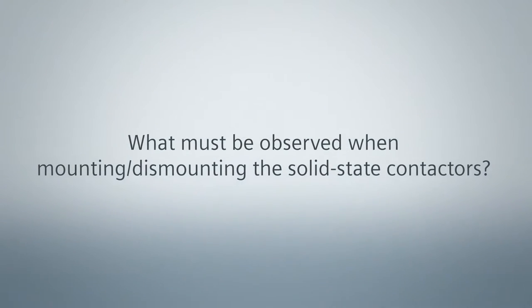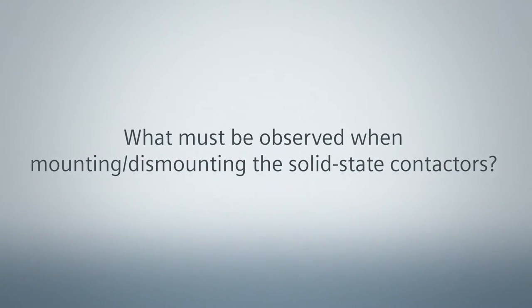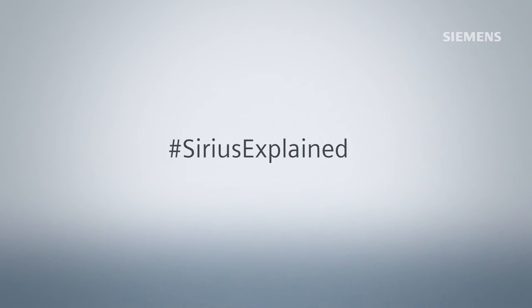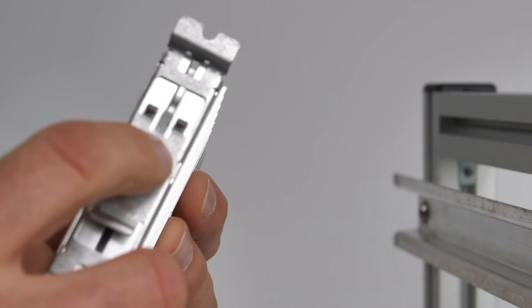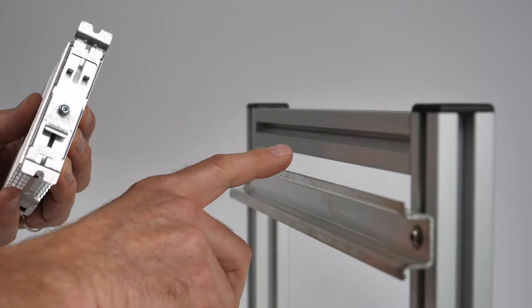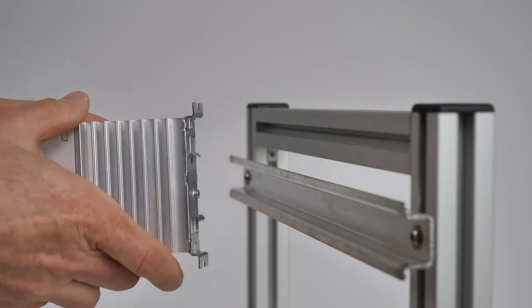What must be observed when mounting and dismounting the solid-state contactors? Mounting: The two mounting hooks and contact tongue in the center must engage cleanly behind the DIN Rail.